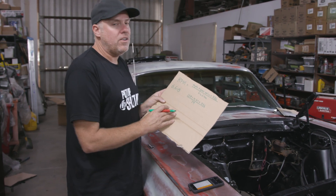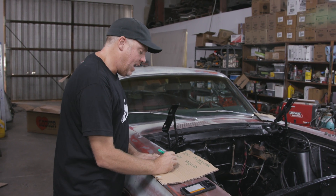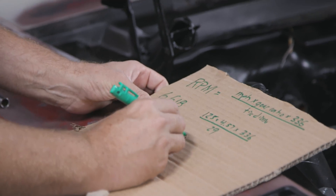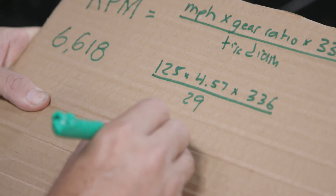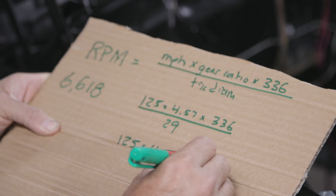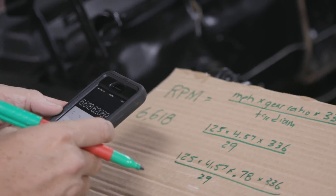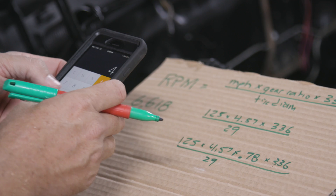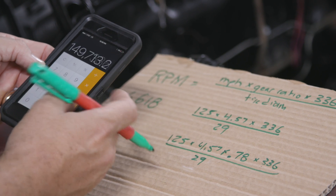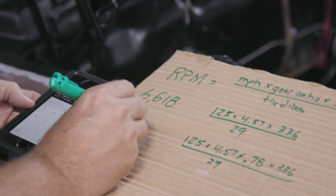The gear ratio in the formula doesn't have to just be the axle ratio. For example, let's say I've got this same setup and I'm going to add a Gear Vendors overdrive, which is a 0.78-to-1 overdrive. So: 125 miles an hour times 4.57 times 0.78 times 336, divided by the tire diameter — and we find the RPM dropped to 5,162.